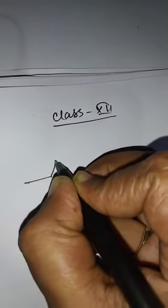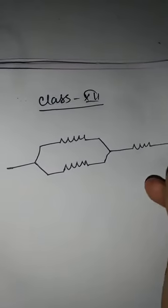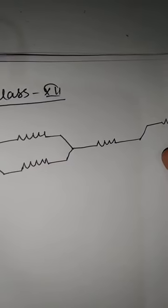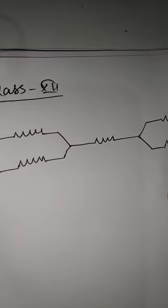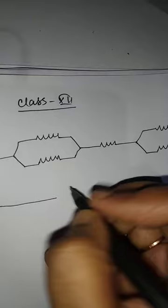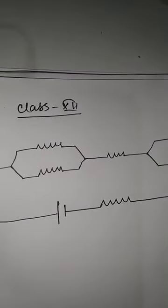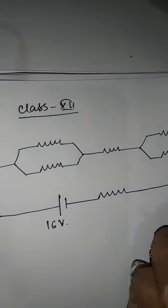Good evening students. Today I will continue with the numericals of the equivalent resistors. So suppose there is a resistor combination, and this is connected with a 16 volt battery with internal resistance 1 ohm.